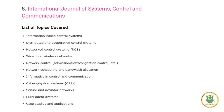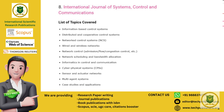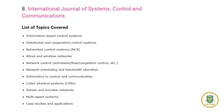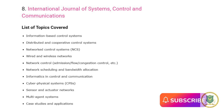Number eight: International Journal of Systems Control and Communications. Topics covered include information-based control systems, distributed and cooperative control systems, network control systems (NCS), wired and wireless networks, network control including admission, flow, and congestion control, network scheduling and bandwidth allocation, informatics in control and communication, cyber physical systems (CPS), sensor and actuator networks, multi-agent systems, and case studies and applications.